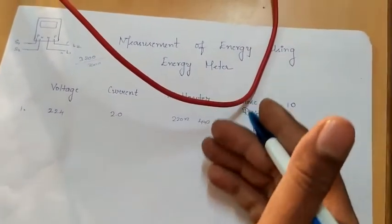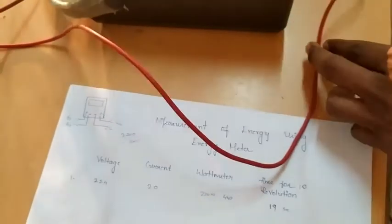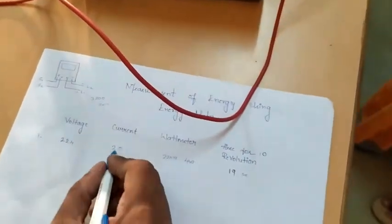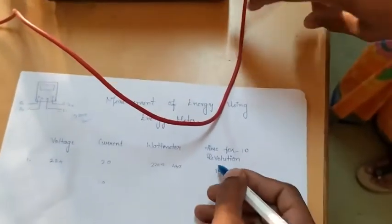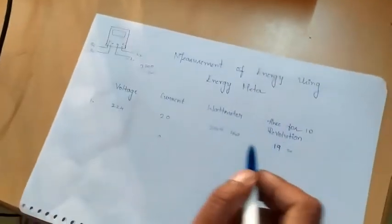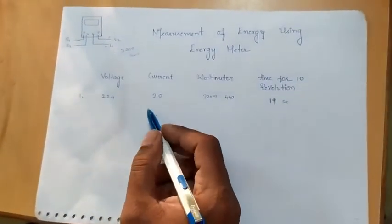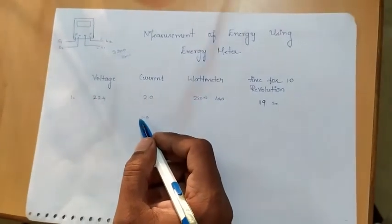Similarly, you have to take more number of readings depends upon the load current. If it is 1 amps, the time should increase. The time for revolution increases with the increase in current value. It's the load current.